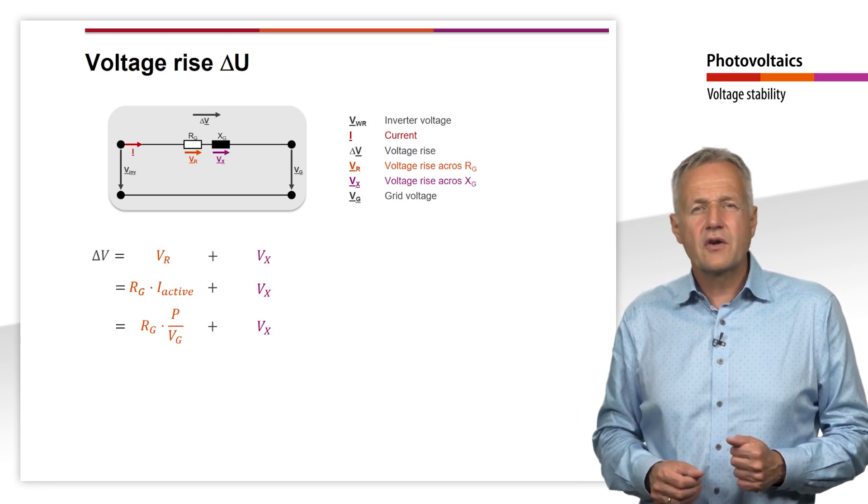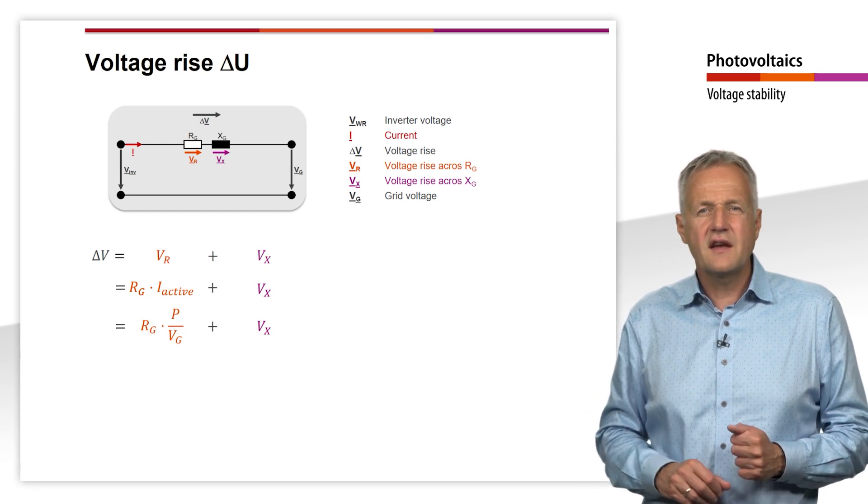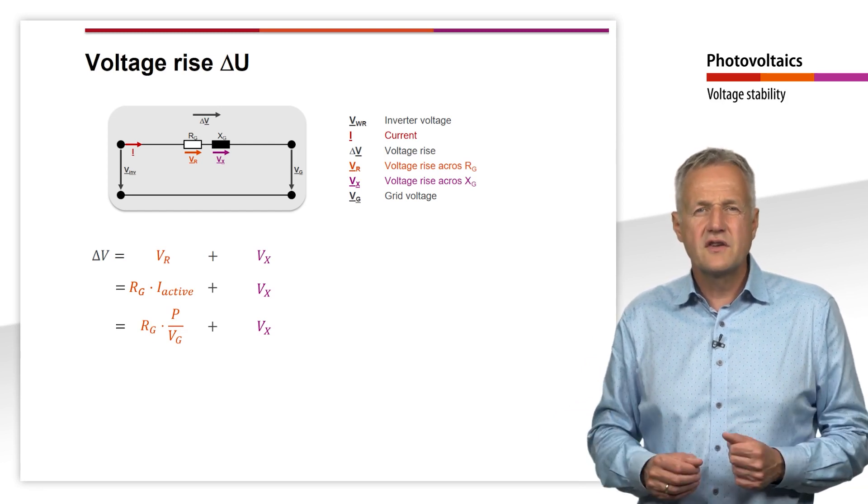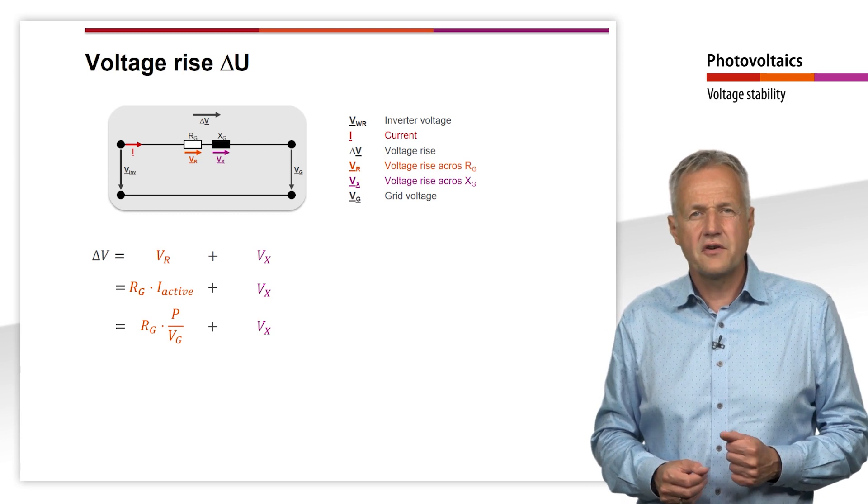For the voltage drop across the reactance, on the other hand, we only have to consider the reactive component of the current.